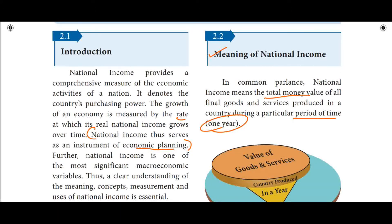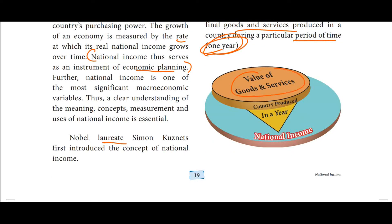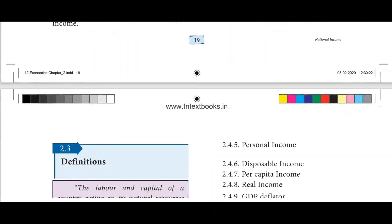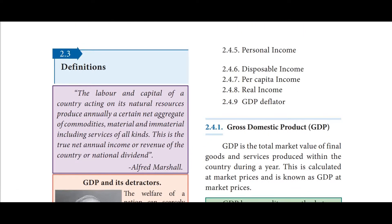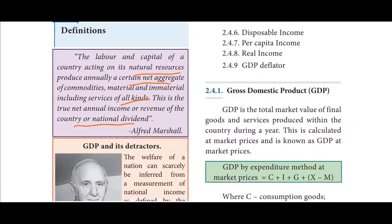National income means the total money value of all final goods and services produced in a country during a particular period of time — say, for example, one year. That is the national income. The labor and capital of a country acting on its natural resources produce annually a certain net aggregate of commodities, materials and immaterial, including services of all kinds.